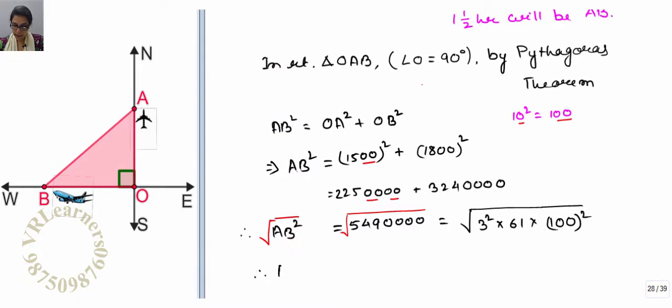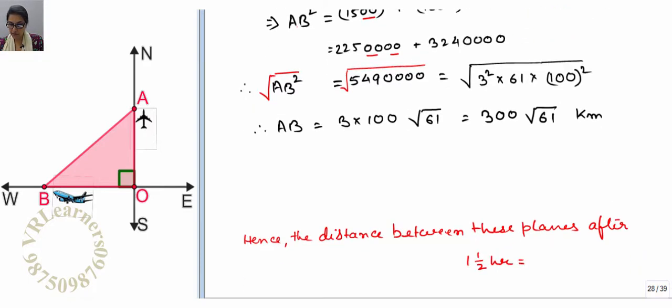Therefore AB is equals to 3 into 100 root under 61, this is 300 root under 61. Since this is in kilometers, hence the distance between these planes after one and half hours is equals to 300 root under 61 kilometers.